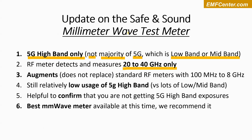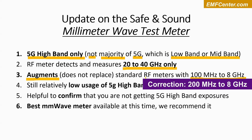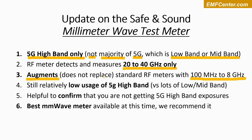This meter doesn't substitute for standard meters like the Safe and Sound Pro — it augments them. In addition to your regular meter covering roughly 100 megahertz to 8 gigahertz, you're adding this as a second meter for the high band. As expected when we tested with it, there's still relatively low usage of 5G high band out there, with the vast majority of signals still in the low and mid band.